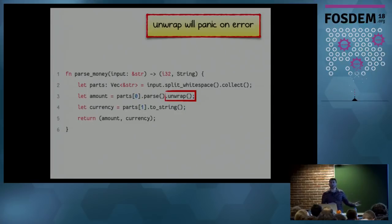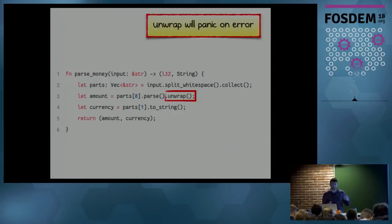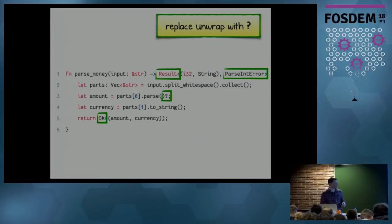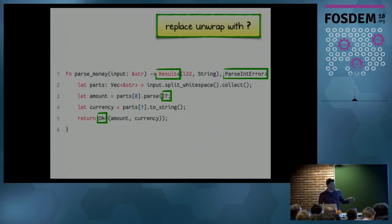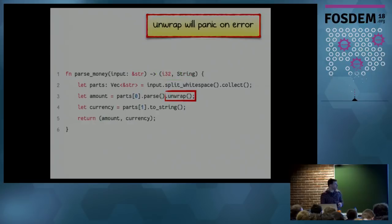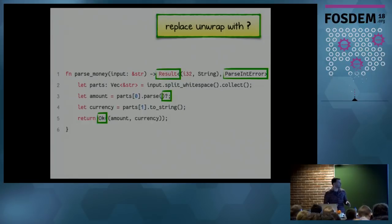The reason `unwrap` is useful: later, when you have something running, you can search for `unwrap` in your code and replace it with something nicer — error handling out of the box. Best of both worlds: rapid prototyping and safety when you need it. One common pattern is to replace `unwrap` with what we call the question mark operator, or the 'try' operator. In line three, behind the `parse`, we just replace `unwrap` with `?`.